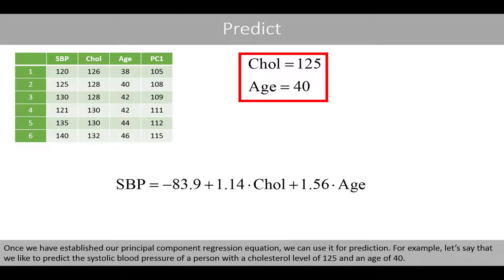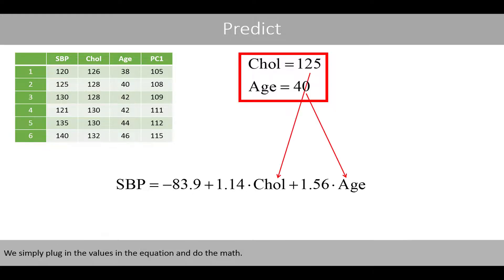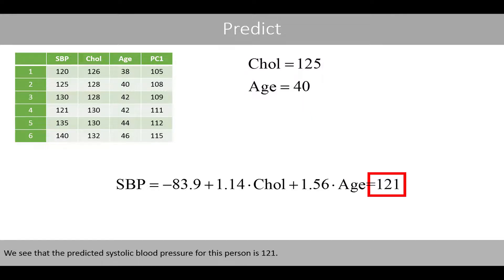Once we have established our principal component regression equation, we can use it for prediction. For example, to predict the systolic blood pressure of a person with a cholesterol level of 125 and an age of 40, we plug these values into the equation. The predicted systolic blood pressure for this person is 121.